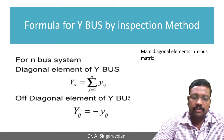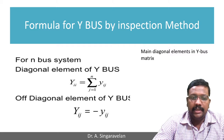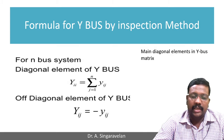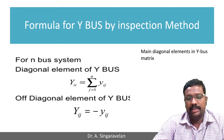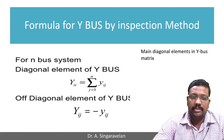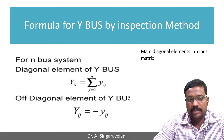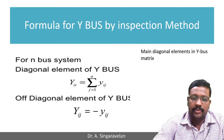The formula for finding the Y-Bus by inspection method: the diagonal element of the Y-Bus matrix can be found by the summation of all the admittances connected to that particular bus. The off-diagonal element is the negative sign of the line admittance.